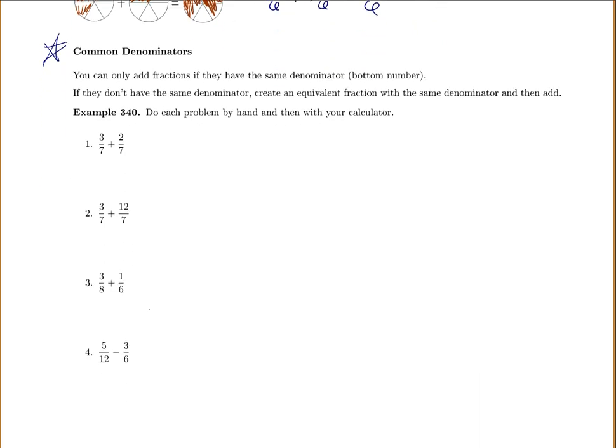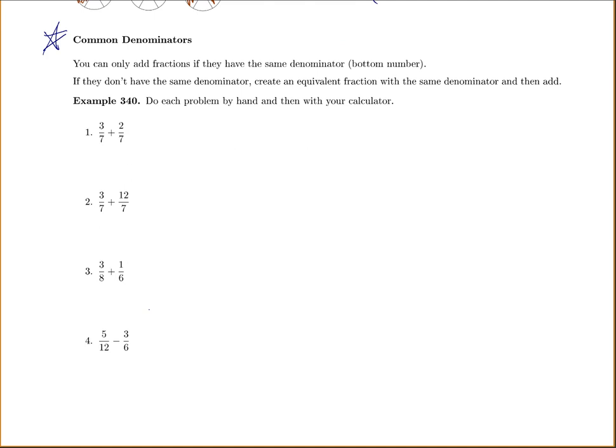So let's do each problem by hand and then with our calculator. If I have three sevenths plus two sevenths, those are the same denominators, those match. So I just add straight across, so that's going to be five out of seven. If you're putting these in your calculator and you're getting a decimal but you want a fraction, you can review which button to push on your calculator to switch it back to a fraction.